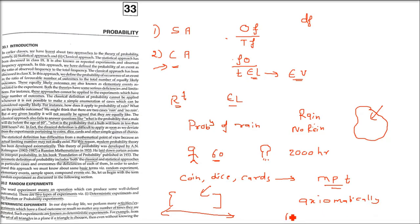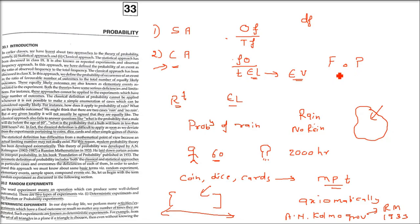This theory of probability was developed by A.N. Kolmogorov, a Russian mathematician, in 1933. He laid down certain axioms to interpret probability and wrote a book, Foundation of Probability, which was published in 1933. This axiomatic definition of probability includes both the classical and statistical approaches as particular cases and overcomes the deficiency of each of them.